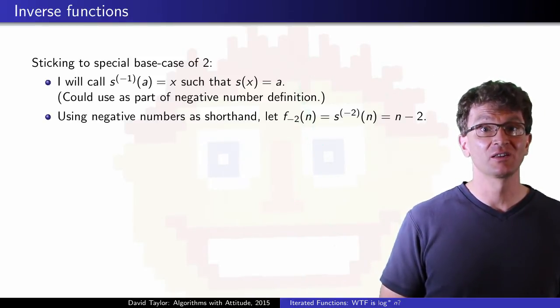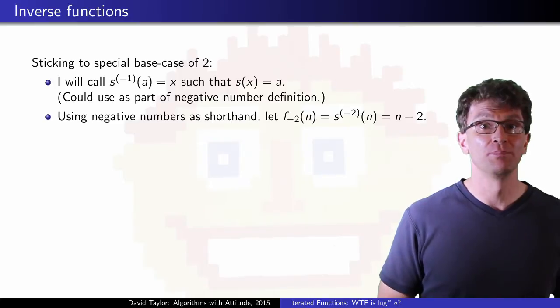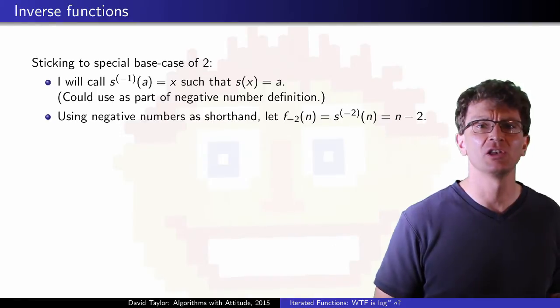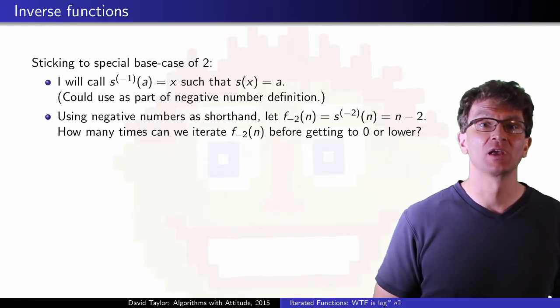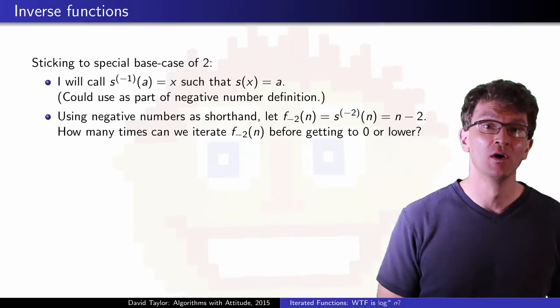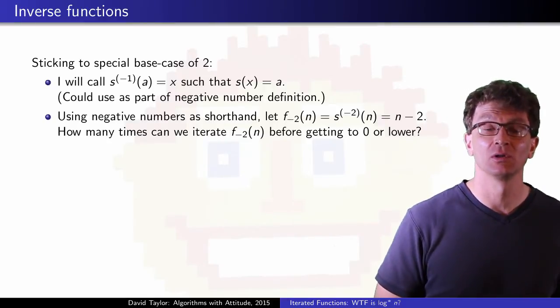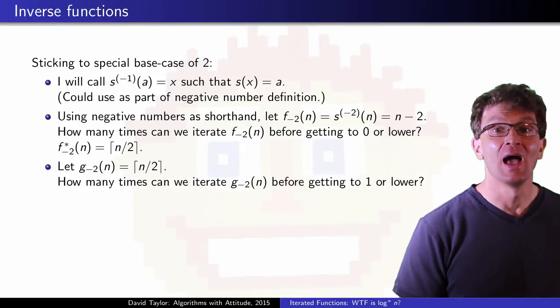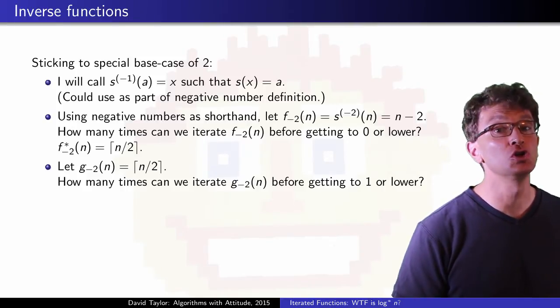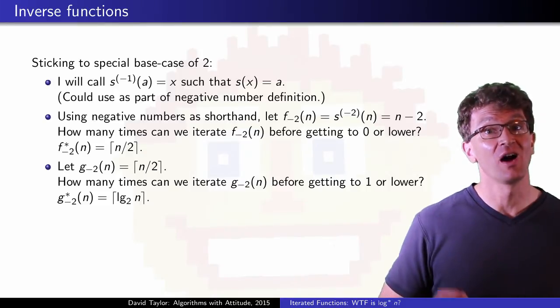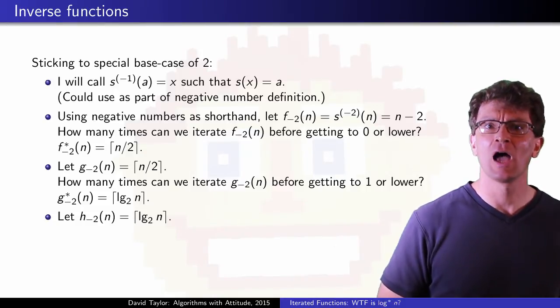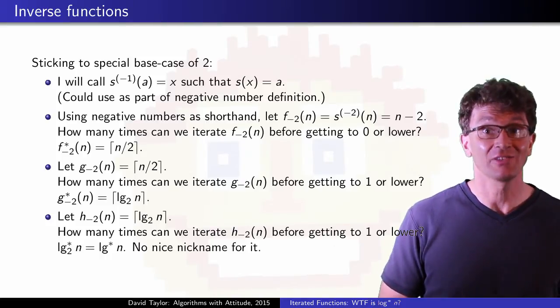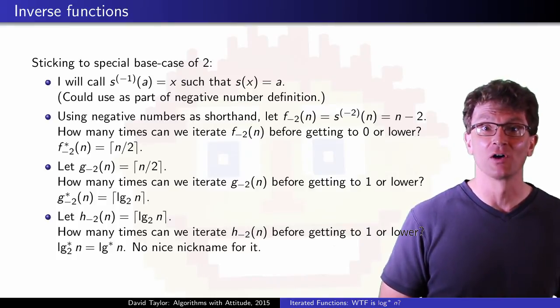Next, I'm going to consider iterating over functions starting with the decrement function. To keep things simple, I'll just stick to the base case of 2, where to build one function from another, we use 2 in the simpler function, and I ask a strange sounding question. How many times can I subtract 2 from n until it gets to 0 or less? That really defines the divide by 2 function. And how many times can I divide by 2 before reaching 1 or less? That defines log base 2. And how many times can we take the log base 2 before getting to 1 or less? That's log star of n, or the iterated log function.